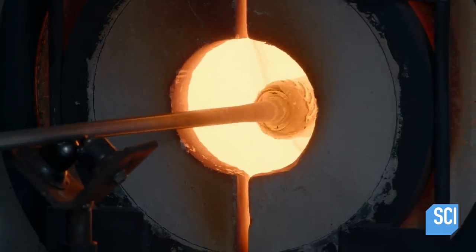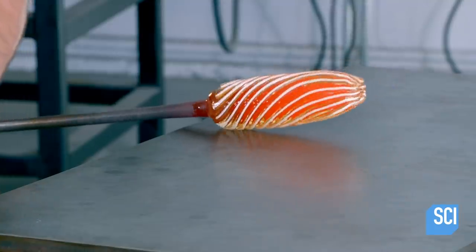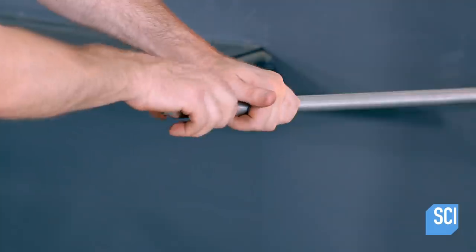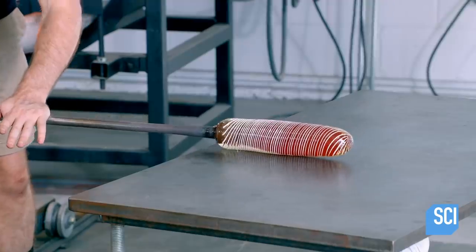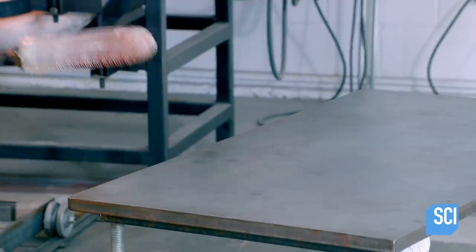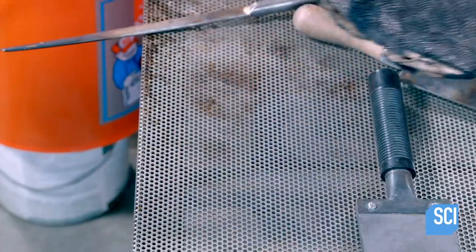The glass is reheated to keep it pliable as the craftsman continues to form it. The craftsman transforms the bubble into a hollow glass tube, then elongating the tube to its desired length.